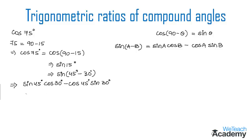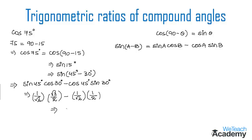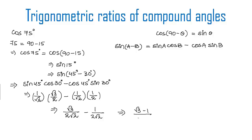Now let us replace all these ratios with their values. sin 45° = 1/√2, cos 30° = √3/2, cos 45° = 1/√2, and sin 30° = 1/2. Multiplying, we get √3 divided by 2√2, minus 1 divided by 2√2. Since the denominators are common, we get (√3 - 1) divided by 2√2.